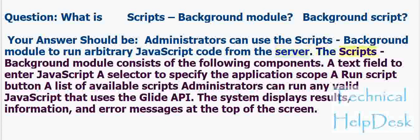The Scripts Background Module consists of the following components: a text field to enter JavaScript, a selector to specify the application scope, a run script button, and a list of available scripts. Administrators can run any valid JavaScript that uses the Glide API. The system displays results, information, and error messages at the top of the screen.